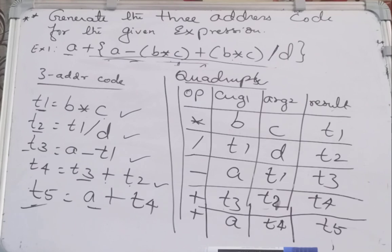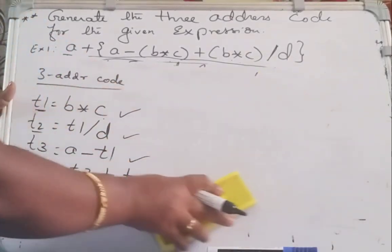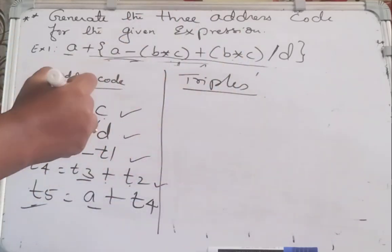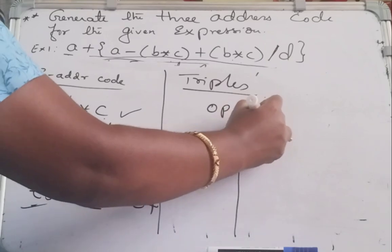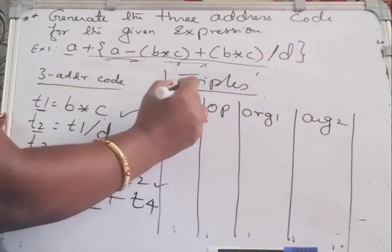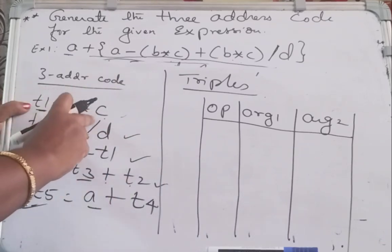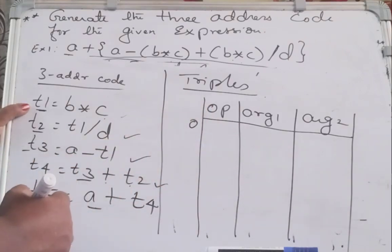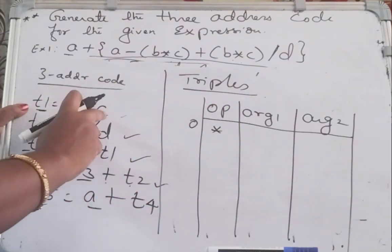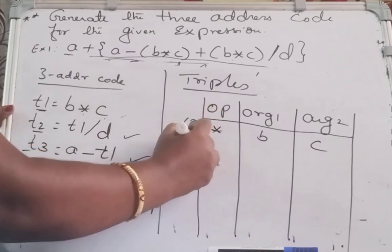In a similar way we can construct the triples. Triples, as the name suggests, makes use of three columns to represent the three address code instruction in intermediate representation. In triples we have operator, argument one, and argument two — with an additional address column. Now take the first instruction: T1 = B star C. Addresses start from 0. The operator is star, argument one and argument two are B and C. We don't have a result column here.